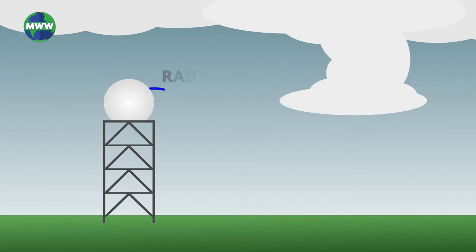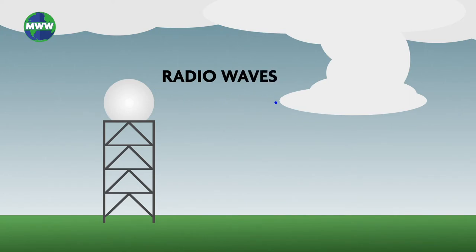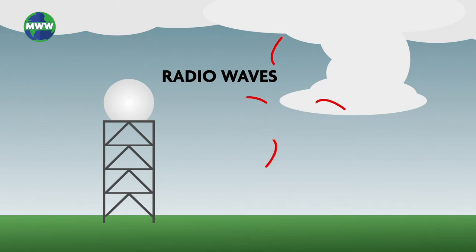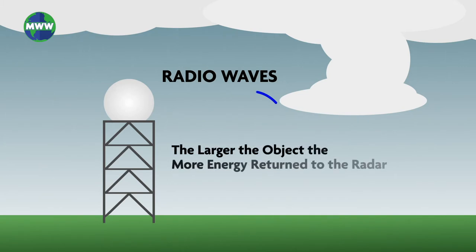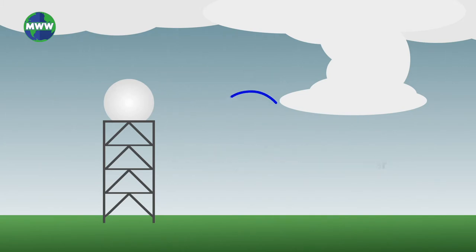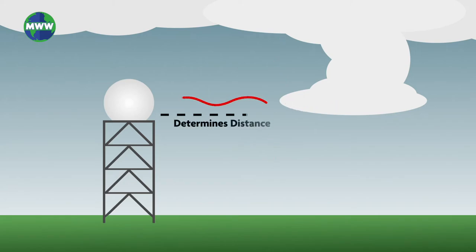Radar works by emitting beams of energy called radio waves from an antenna. As the radio waves hit objects in the atmosphere, energy is scattered in all directions with some energy reflected back to the radar. The larger an object, the more energy returned to the radar. The time it takes for the energy to be transmitted and returned determines the distance to that object.